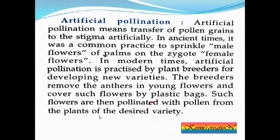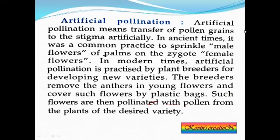The last topic is artificial pollination. Natural pollination is the transfer of pollen grains from anther to stigma by natural agents. Artificial pollination means human activity is involved — when humans transfer pollen from anther to stigma, it is called artificial pollination. This is not a new practice; in ancient times, people used to sprinkle male flowers of palms on female flowers. In modern times, it is practiced by plant breeders.